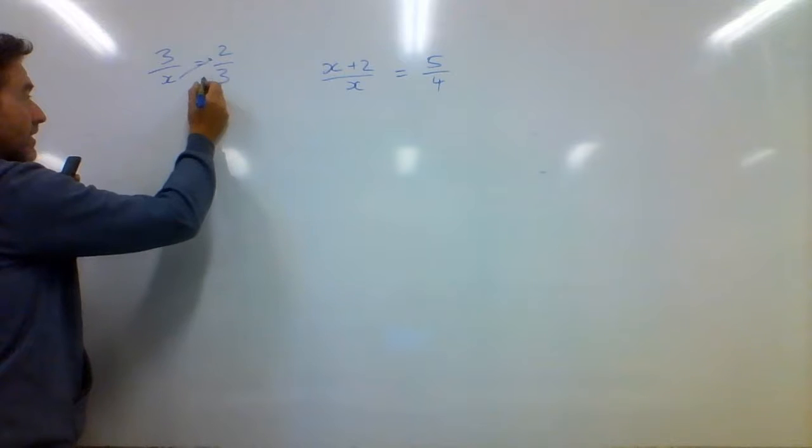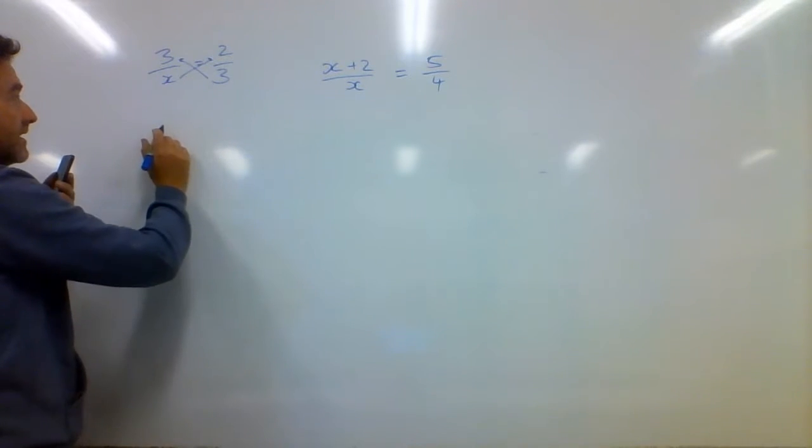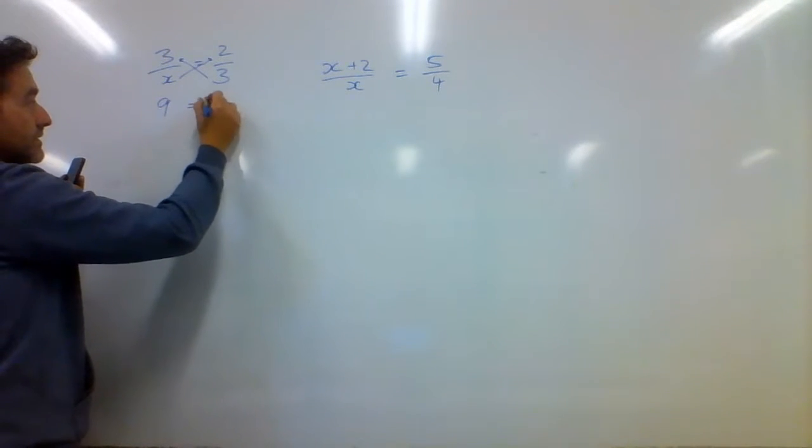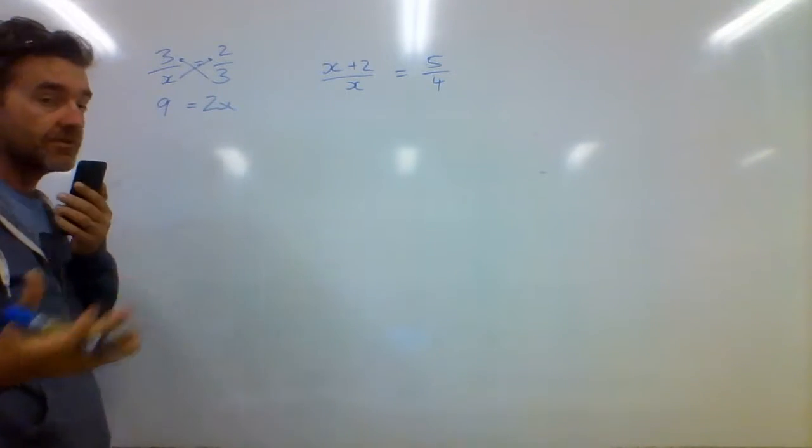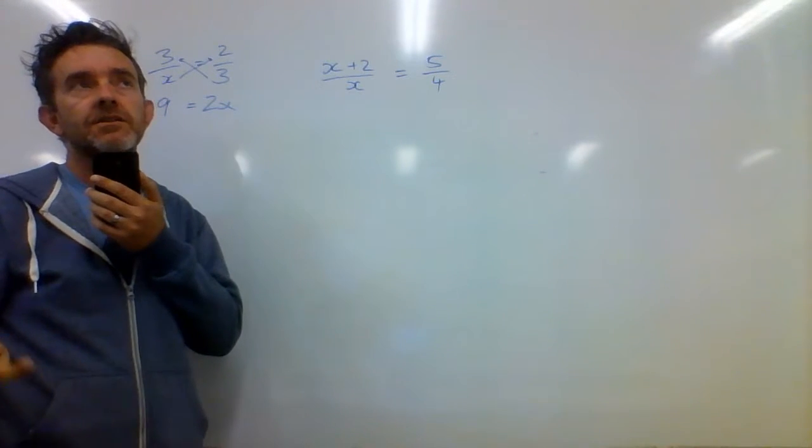Because X times 2 will go over there and 3 times 3 will be over here. We'll end up with 9 being equal to 2X. And if you watched the previous vid, I mentioned how this works.